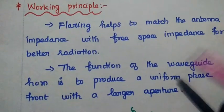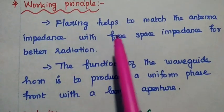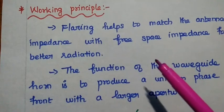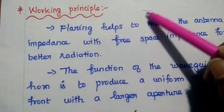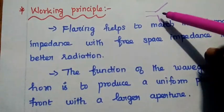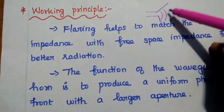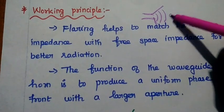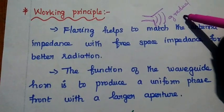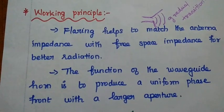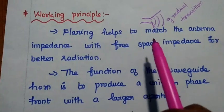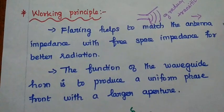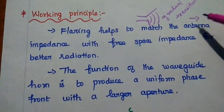The working principle of horn antenna: this flaring at the end helps to match the antenna impedance with the free space impedance for better radiation. There is a gradual transition of the signal from the narrow waveguide to the wide opening, and because of this gradual transition, it can easily match antenna impedance with free space impedance for maximum radiation in a particular direction.